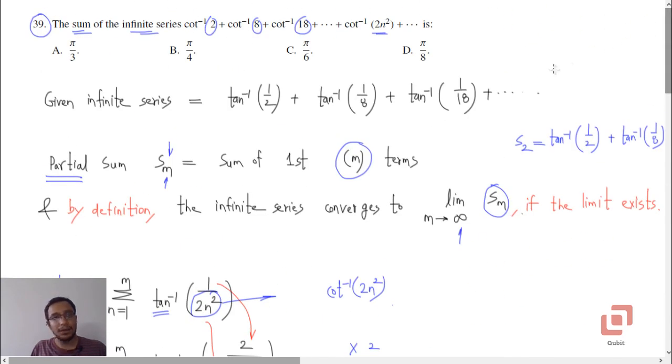What was that? Cot inverse of 2 plus cot inverse of 8 plus cot inverse of 18 and so on, it converges to pi by 4, so the correct option is B. This is question 39. In the next video we will solve question 40.